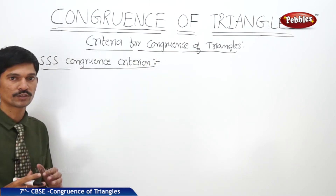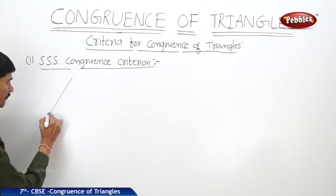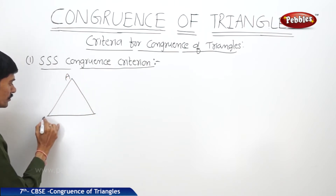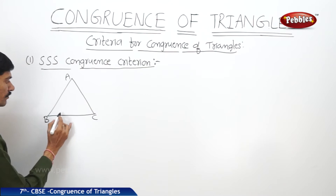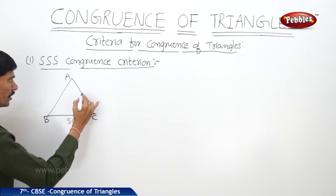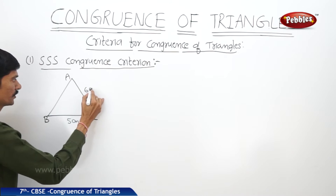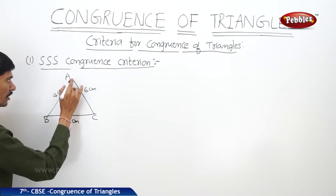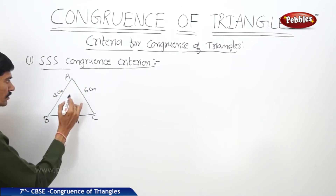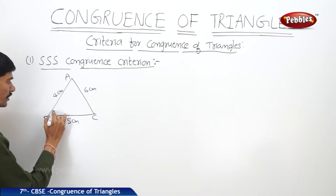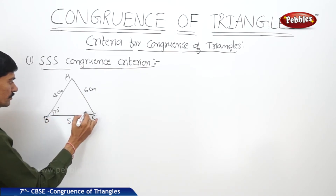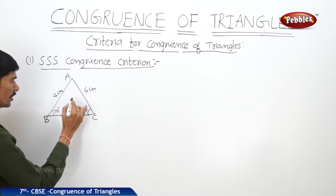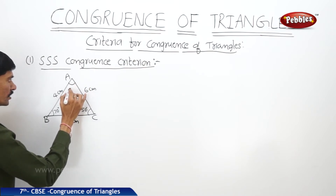For example, you have drawn triangle ABC with given sides and angles. The length of BC is 5 centimeters, AC is 6 centimeters, and AB is 4 centimeters. The angles are: angle B is 70 degrees, angle C is 50 degrees, and angle A is 60 degrees.